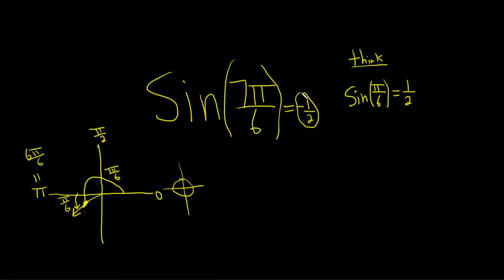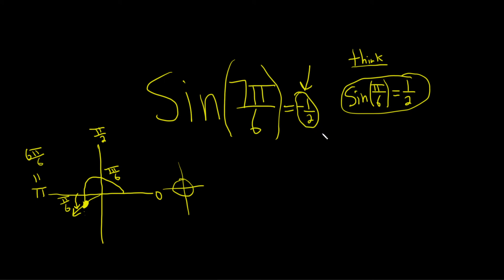Let me go over that again. When you see sine of 7 pi over 6, you think: what is the sine of pi over 6? That's just from pure memory — it's 1 half. Then you ask yourself where is 7 pi over 6 on the unit circle? It's down here. And sine is the y-coordinate, which means it must be negative. That's how you get your answer. The trig function values of an angle and its reference angle are the same, except for possibly the sign. That's a really key fact, and that's why this always works.